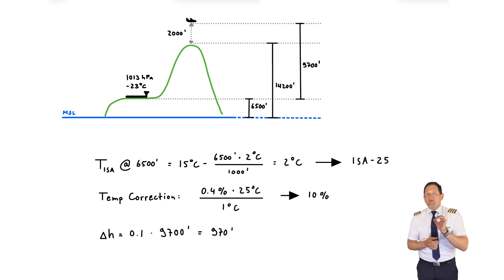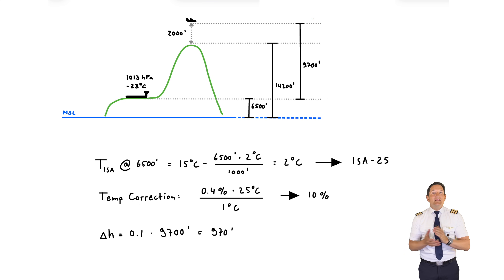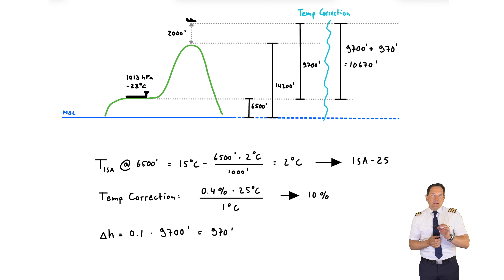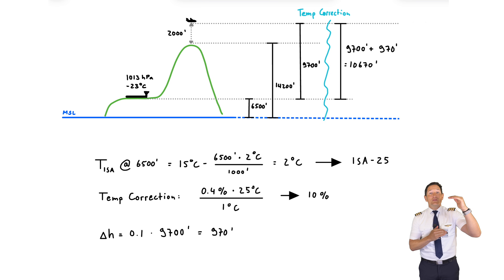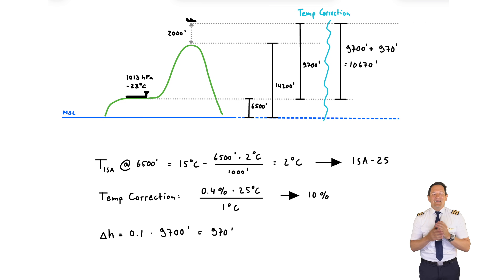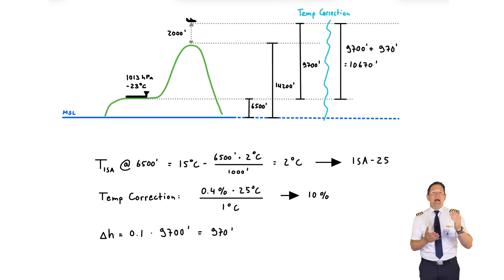Now do we add this or do we subtract it? We need to add it, since the isobars are closer together when it's colder, so your altimeter shows an altitude that is way higher than your true altitude. Good donkey bridges that might help you: 'From warm to cold you won't get old,' or 'in winter the mountains are higher.' Thank me later.